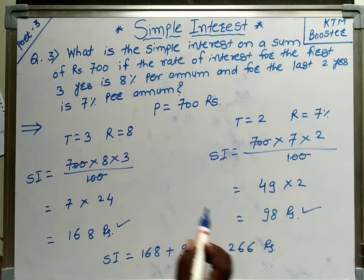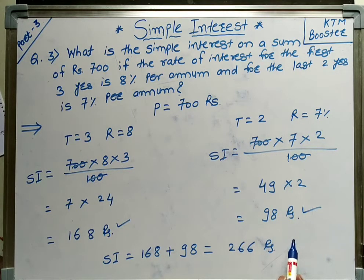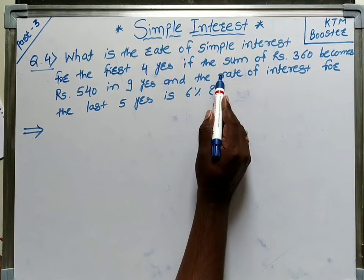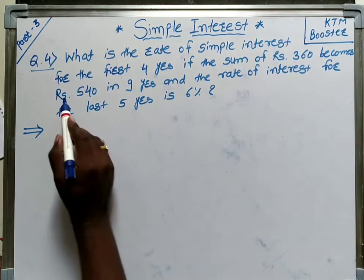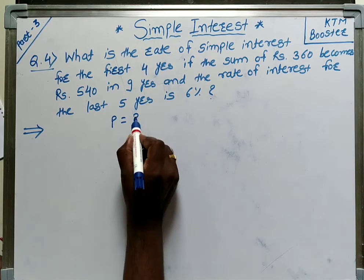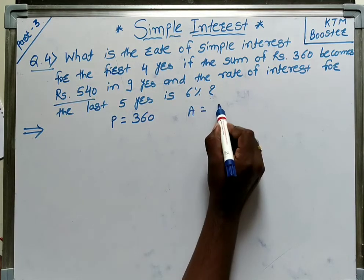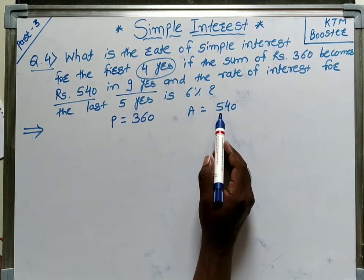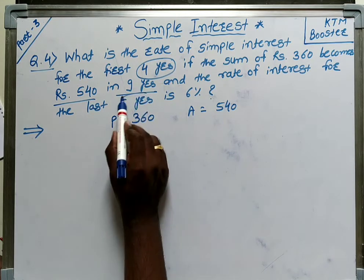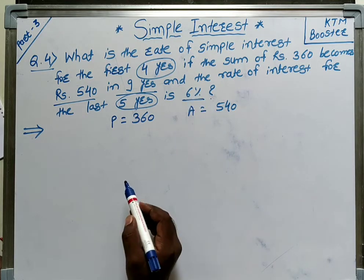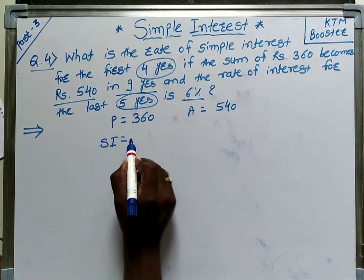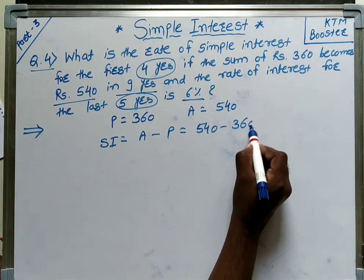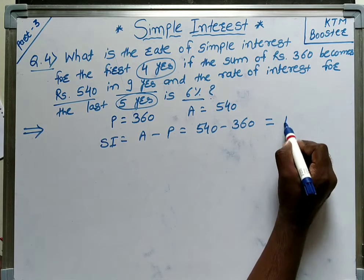Now we will see question number 4: what is the rate of simple interest for the first 4 years if a sum of 360 rupees becomes 540 in 9 years? Our principal is 360 rupees and the amount is 540 rupees. For the first 4 years the rate is different, and for the last 5 years the rate is 6%. SI equals A minus P, that is 540 minus 360, which is 180 rupees.